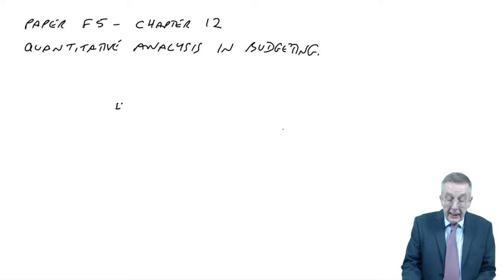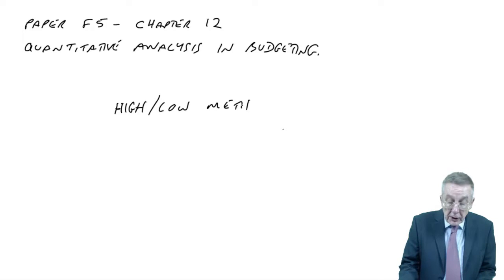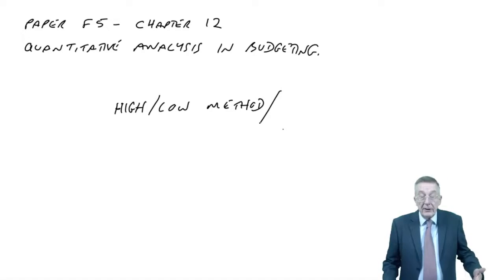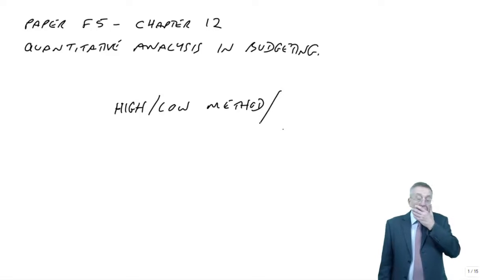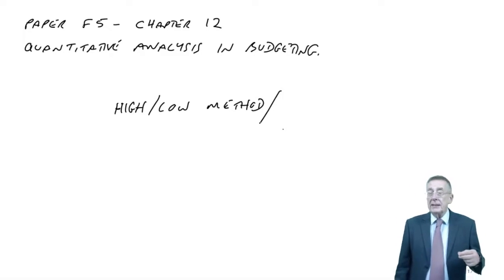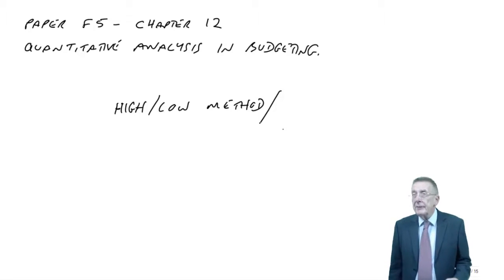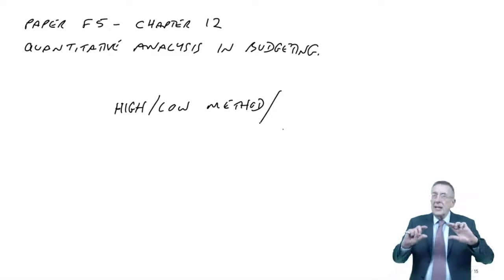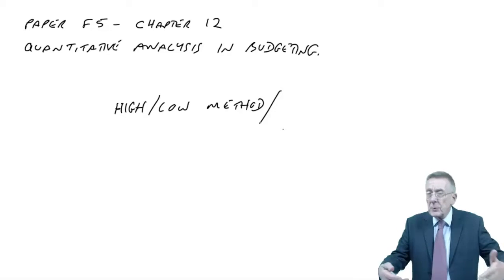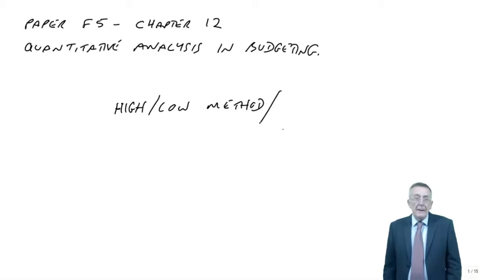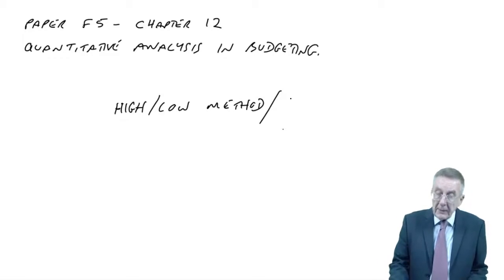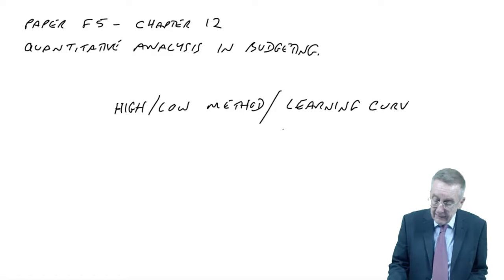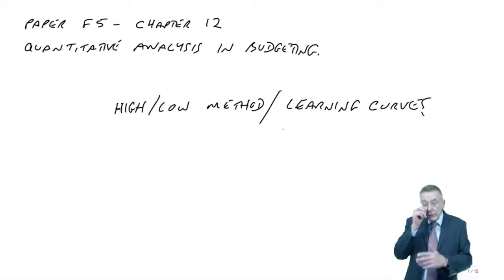The two techniques are called the high-low method, which is something you should have heard before because it was in paper F2. Although you should have heard of it before, it can still be asked in paper F5. The other one is something that wasn't in F2 at all, something called learning curves, which are a fair bit more involved.